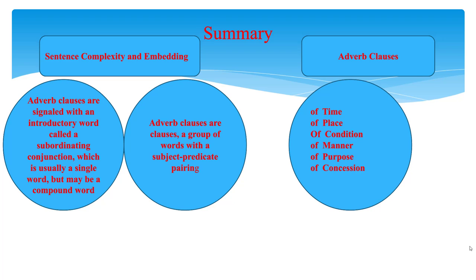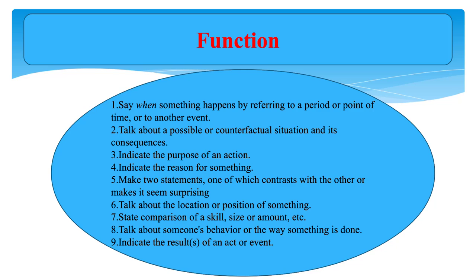Let's talk about adverb clauses showing opposition. This type of clause shows an unexpected or non-self-evident result based on the dependent clause. Example: 'He bought the car even though it was expensive.' Punctuation: when an adverb clause begins the sentence, use a comma to separate the two clauses — 'Even though it was expensive, he bought the car.' When the adverb clause finishes the sentence, there is no need for a comma — 'He bought the car even though it was expensive.'